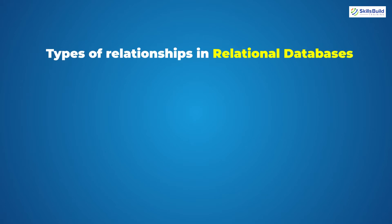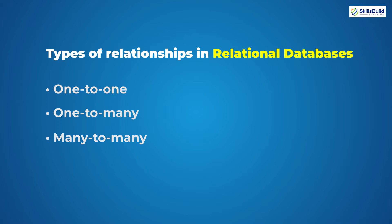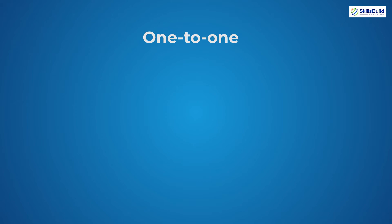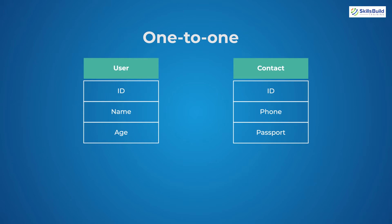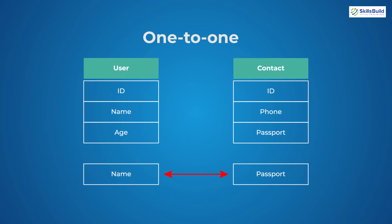In relational databases we have different types of relationships: one-to-one, one-to-many, and many-to-many. Let's talk about one-to-one first. As the name suggests, we have a relation where a user table has a relation with a contact table. In the user table we have user ID, name, and age, and in the contact table we have ID, phone number, and passport number. Each user will have one contact record — for example, one person cannot have more than one passport number.